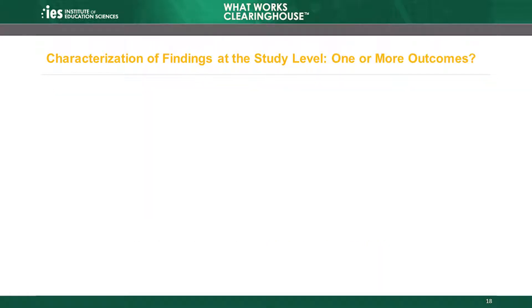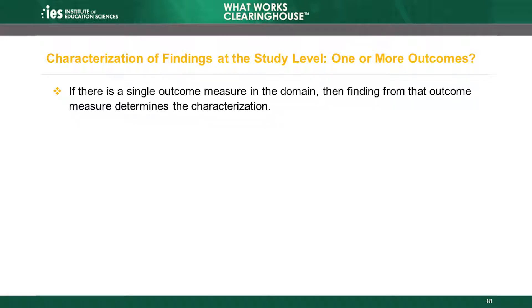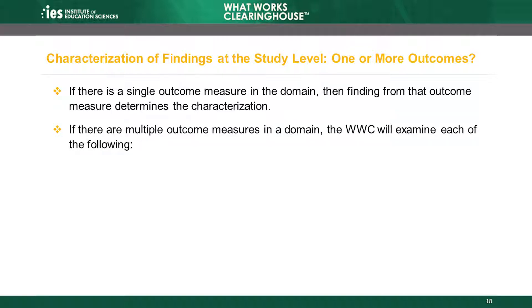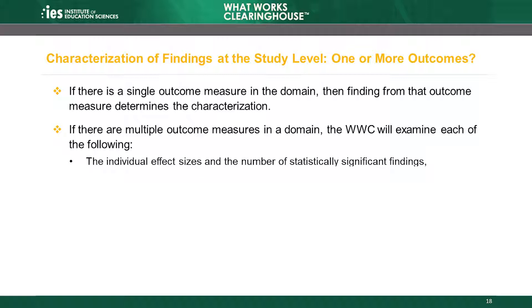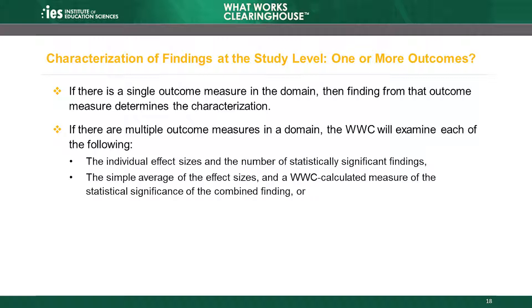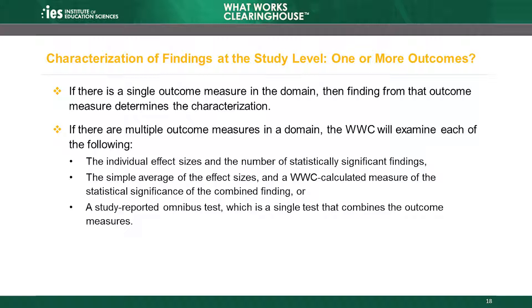The criteria for the characterization of findings depend on whether the domain includes main findings from one or more outcome measures. If there is a single outcome measure in the domain, then the main finding for that outcome measure determines the characterization. If there are main findings from multiple outcome measures in a domain, the WWC will base its characterization on one or more of three sets of information: the individual effect sizes and number of individually statistically significant findings; the simple average of the effect sizes and a WWC-calculated measure of their statistical significance as a group; or a study-reported omnibus test, which is a single test that combines the outcome measures.